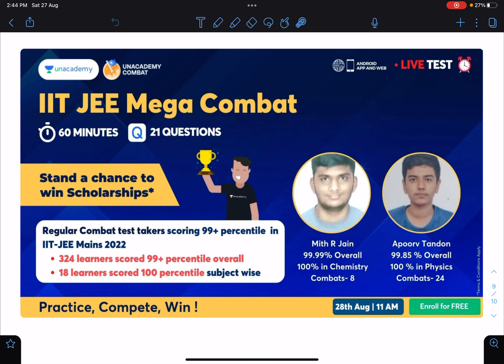And a lot of students who are not part of regular programs of Unacademy but still they appear on JEE combat, like you have approved under 99.85 percentile overall, 100% in physics, and he has written 24 combats. And similarly Mithraj and he has got 99.99 percent and overall 100 percentile in chemistry.